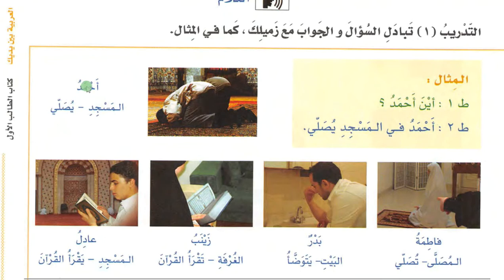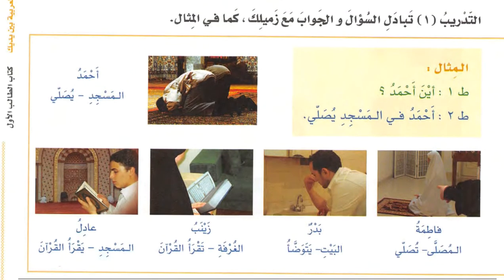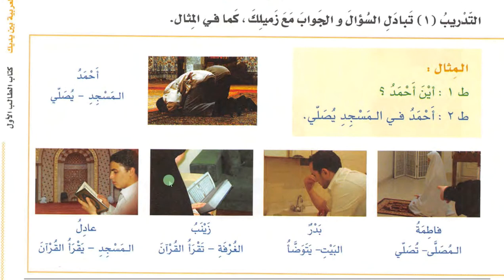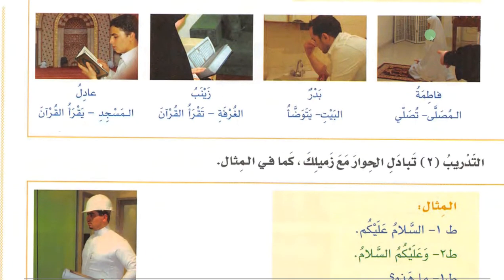You see a picture with three words: Ahmad, Al-Masjid, and Yusalli. The first student asks: أين أحمد — where is Ahmad? The second student replies: أحمد في المسجد يصلي — Ahmad is in the masjid, he is praying. You need to ask the question for each person in the picture. For Fatima, ask: أين فاطمة? The reply is: فاطمة في المصلى تصلي.